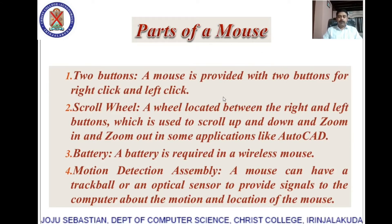Parts of a mouse: First, there are two main buttons provided for right-click and left-click. Then a scroll wheel between the right and left click buttons, which is used to scroll up and down and zoom in and zoom out in some applications like AutoCAD. There is also a battery compartment.